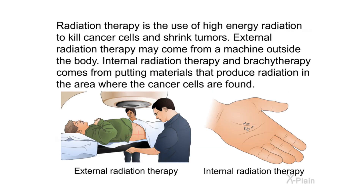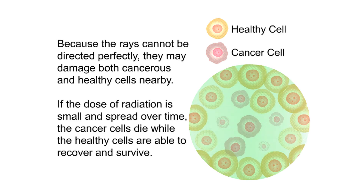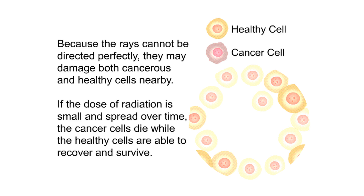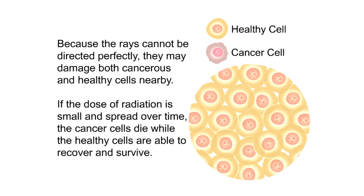Radiation therapy is the use of high-energy radiation to kill cancer cells and shrink tumors. External radiation therapy may come from a machine outside the body. Internal radiation therapy, or brachytherapy, comes from putting materials that produce radiation in the area where the cancer cells are found. Because the rays cannot be directed perfectly, they may damage both cancerous and healthy cells nearby. If the dose of radiation is small and spread over time, the cancer cells die while the healthy cells are able to recover and survive.